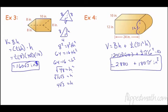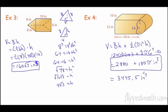That answer — 2,880 plus 180pi — is the exact answer. If you plug it into a calculator, the approximation to the nearest tenth is 3,445.5 cubic inches. Remember: exact answer versus approximation — know which one is being asked for.